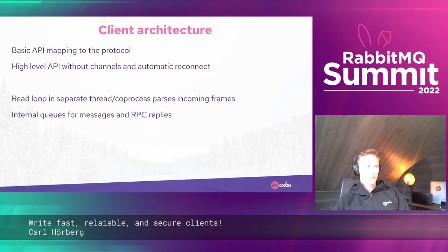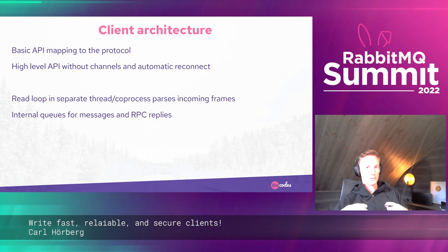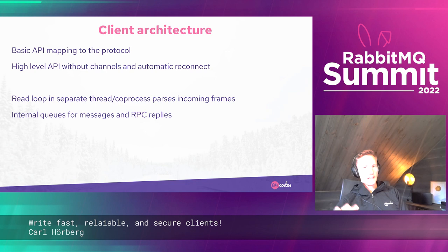For client architectures, I typically first map out a basic API that maps to the protocol. In an object-oriented language I'd have classes like Connection, Channel, and on the channel methods like queue_declare, basic_consume, and so on. This maps very nicely to the protocol without any fancy things like reconnect logic. Then I develop a high-level API on top that does away with channels, so users don't have to think about channels, and adds automatic reconnect with thread safety.